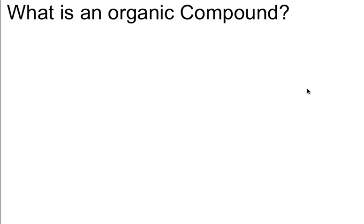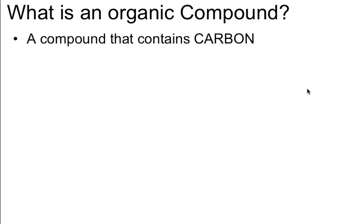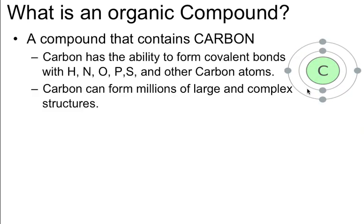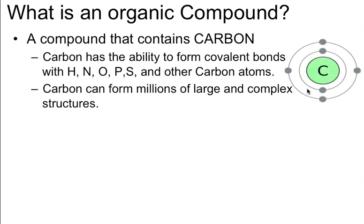So what exactly is an organic compound? We hear the word organic quite a lot these days, especially at supermarkets. But when we say organic compounds, what we mean is a compound that contains carbon. Carbon has some very unique properties — it has the ability to form covalent bonds with the other elements important for life: hydrogen, nitrogen, oxygen, phosphorus, sulfur, and even other carbon atoms.